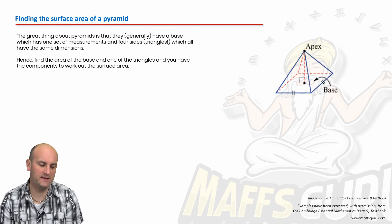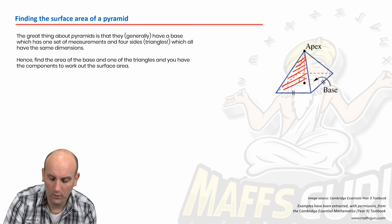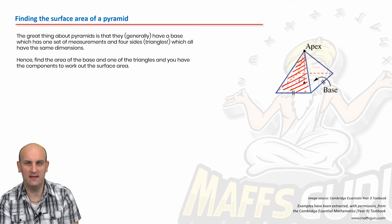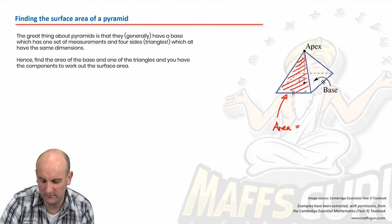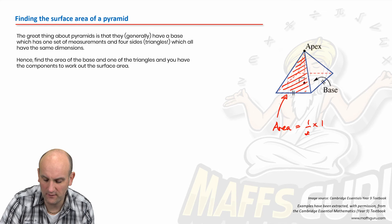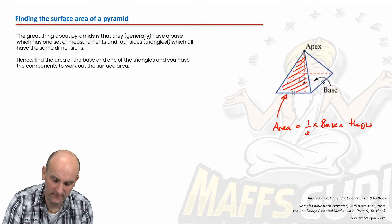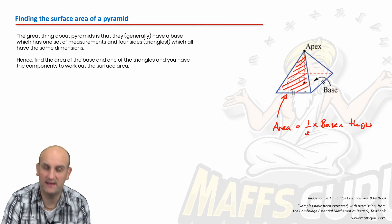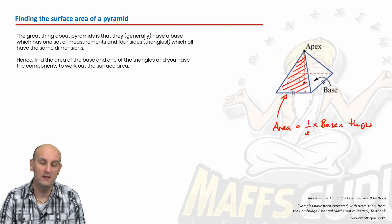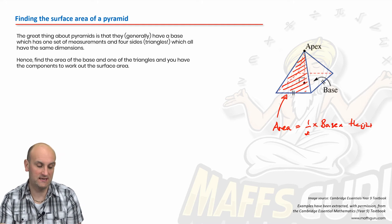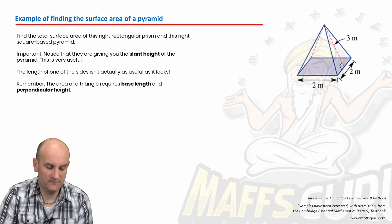What about the surface area of a pyramid? As I have said, generally speaking, these things here will all have the same area. So once we found the area of one of them, once we found the surface area of one of them, which is half base times height for a triangle, and we find the area of the base, and the base of that is generally going to be a square, so that's nice and easy. Then you add all of those together.